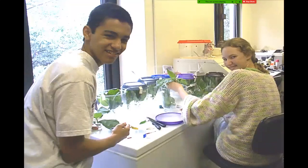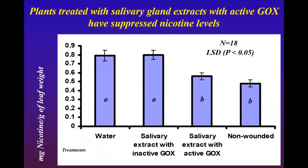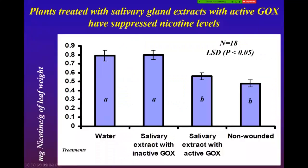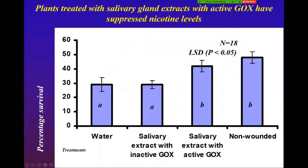Going back to the survival graph — I want you to see how well nicotine levels and survival correlated inversely. Nicotine levels were higher for water treatment and inactive extract, while survival was lower in those treatments. For non-wounded or active glucose oxidase treatments, nicotine levels were lower and survival was higher. High nicotine levels correlate with lower survival, and lower nicotine levels correlate with higher survival.